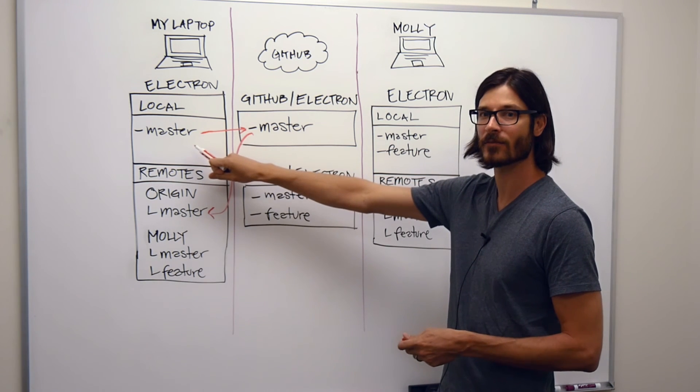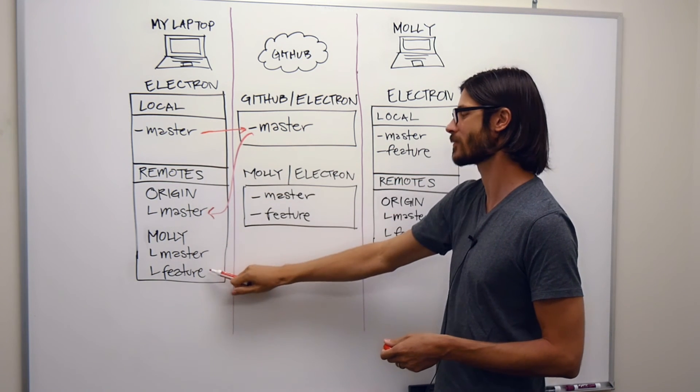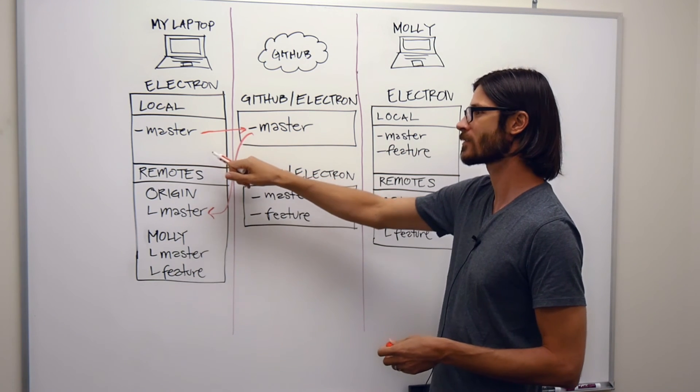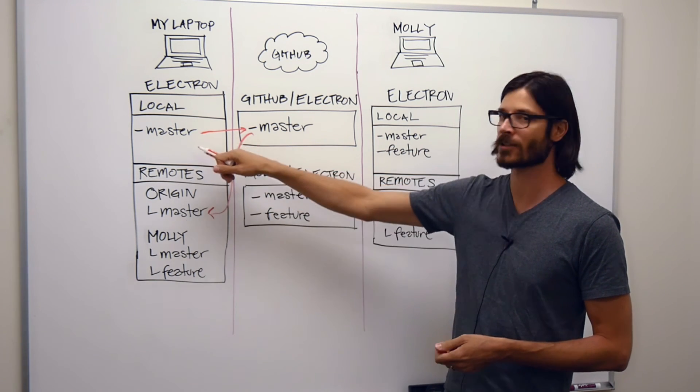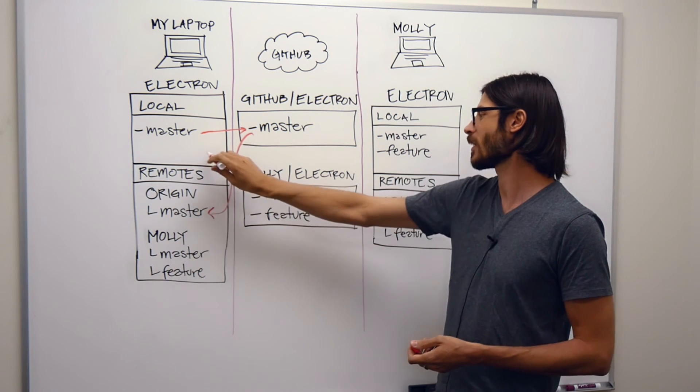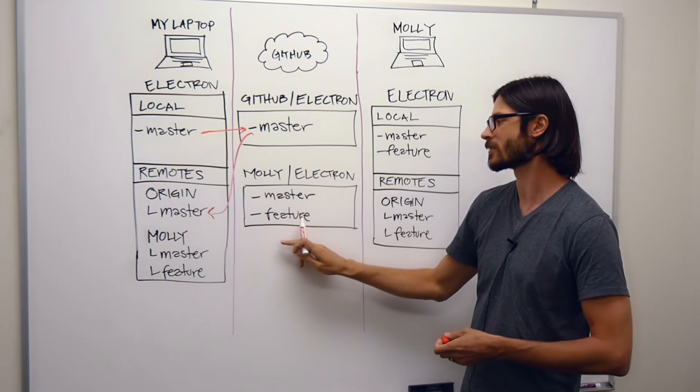It doesn't automatically create local copies of those. I would have to manually copy that and make the change. But if I wanted to, now I could check out feature, do some work, and push it up, and it would push up to Molly's version of Electron.